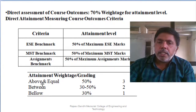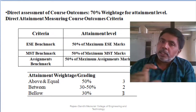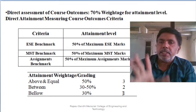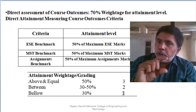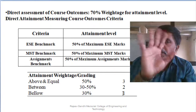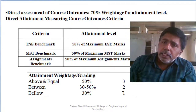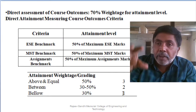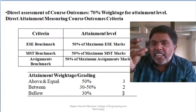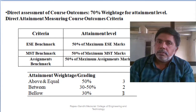For the attainment weightage calculation: scoring above or equal to 50% earns a weightage of 3; between 30% and 50% earns 2; below 30% earns 1. Even failed students are given a weightage of 1 because they have gained something — as evidenced by the fact that even failed students sometimes get jobs. We reduce their weightage but do not exclude them.